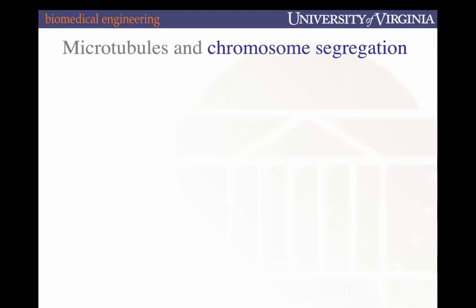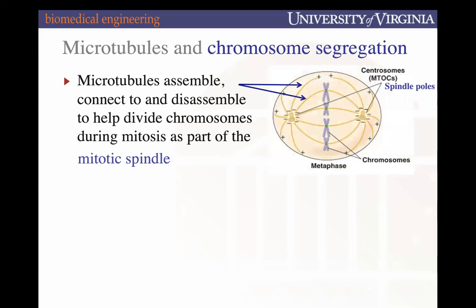One of the reasons this dynamic behavior is so key is that it helps facilitate chromosome segregation during mitosis. The minus end is stabilized in the MTOCs — the microtubule organizing centers — which for most mammalian cells are the centrosomes, also called spindle poles. During mitosis, the microtubule will begin to polymerize and help pull apart chromosomes to make up the mitotic spindle, which is comprised of the MTOC, the microtubule, and the chromosome.